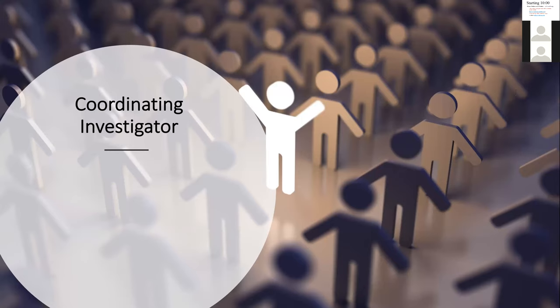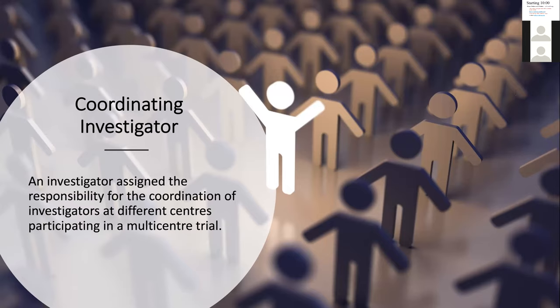Then you have the definition of a coordinating investigator. This is an investigator assigned the responsibility of coordination of investigators at different centers in a multi-center clinical trial. So if you have a multi-center clinical trial, that means many centers may be in one region, and each center has an investigator. They can sometimes have one investigator assigned as the coordinating investigator who will coordinate some of the activities.